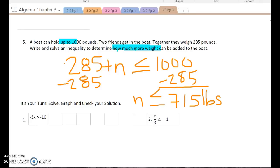So I finish solving it by subtracting 285 pounds from each side. And I see that there is space for 715 pounds more. I plug it back in to check. 285 plus 715 is a thousand pounds. So I know as long as I pick a number that is smaller than or up to at most 715 pounds, I will get this to work.